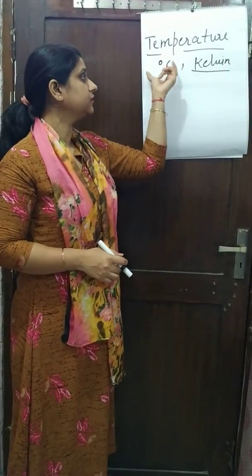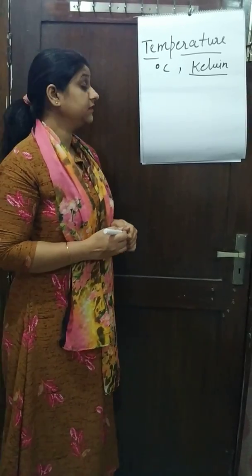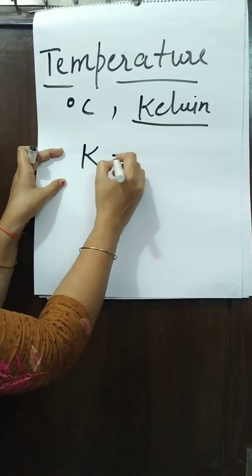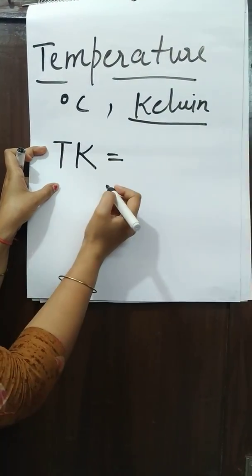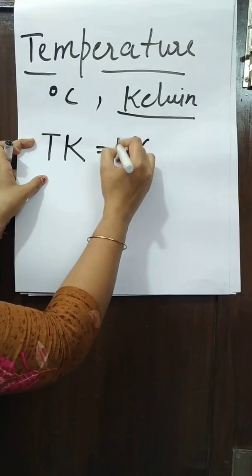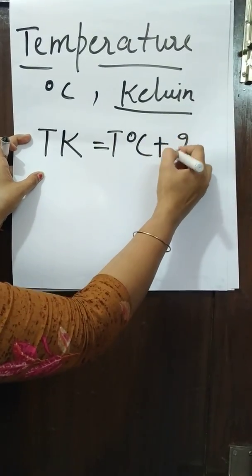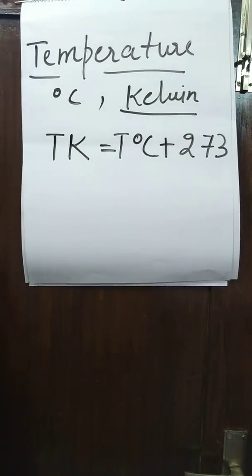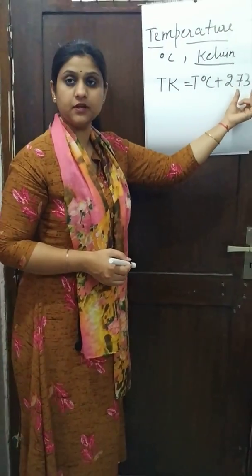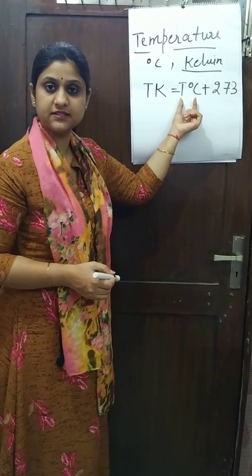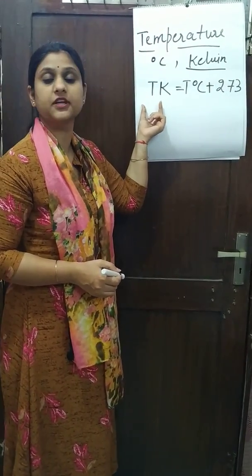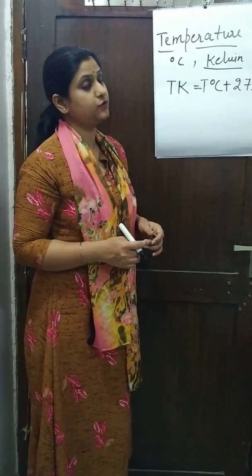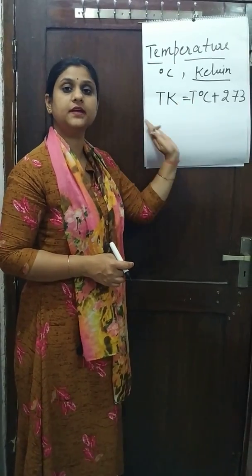Kelvin is the bigger unit as compared to degree Celsius, and we have one formula for the comparison: temperature in Kelvin scale equals temperature in degree Celsius plus 273. So 273 is the number you have to add to the degree Celsius temperature to get the temperature in Kelvin scale, because Kelvin scale is the biggest one.